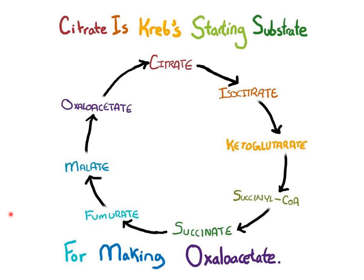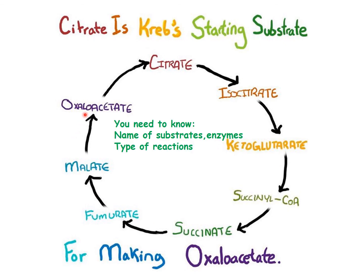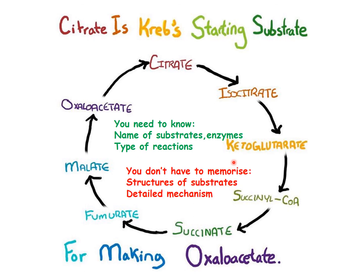Here is a useful mnemonic to remember all the substrates in the Krebs cycle: 'Citrate is Krebs' starting substrate for making oxaloacetate.' C is for citrate, I is for isocitrate, K is for alpha-ketoglutarate, and so on. From this lecture, you need to remember the names of the substrates, the names of the enzymes, and the types of chemical reactions, but you are not expected to remember all the structures or detailed mechanisms.